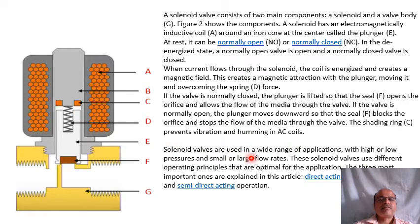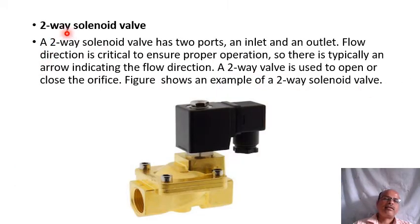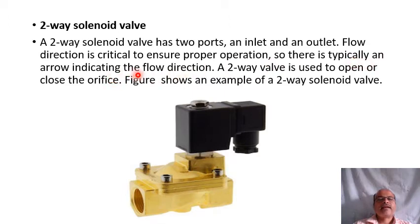Solenoid valves are used across a wide range of high or low pressure and small or large flow rates. Regarding valve types: a two-way solenoid valve has two ports — one inlet and one outlet. Flow direction is critical to ensure proper operation, typically indicated by an arrow. A two-way valve is used to open or close the orifice.